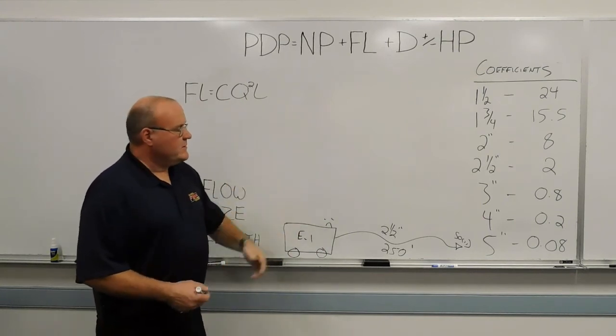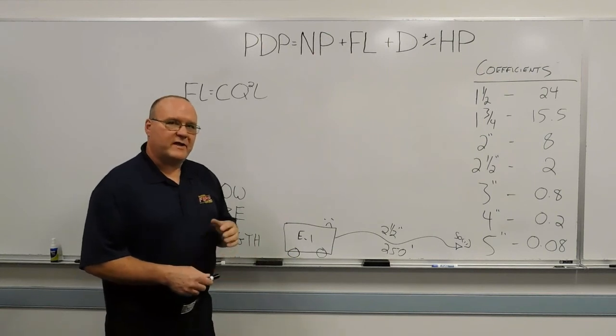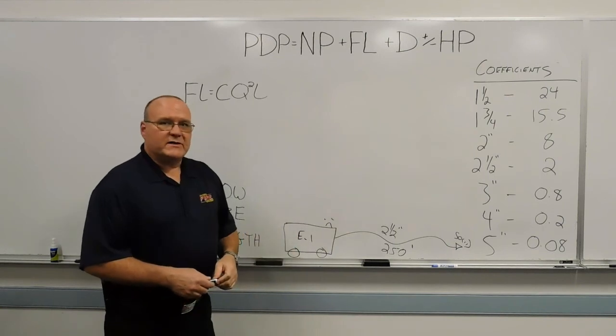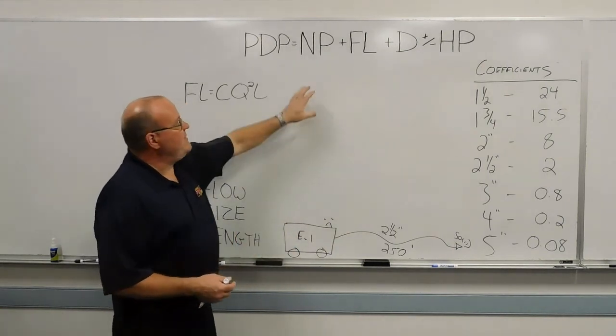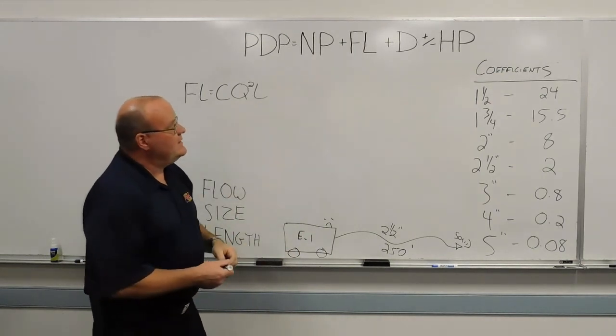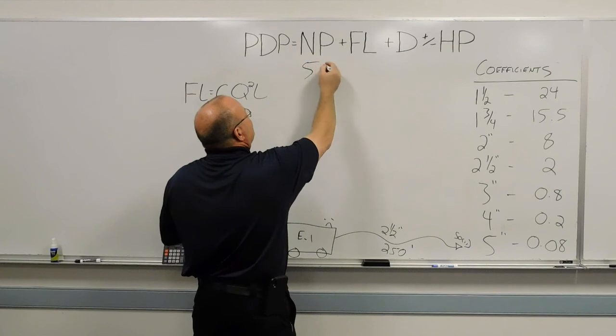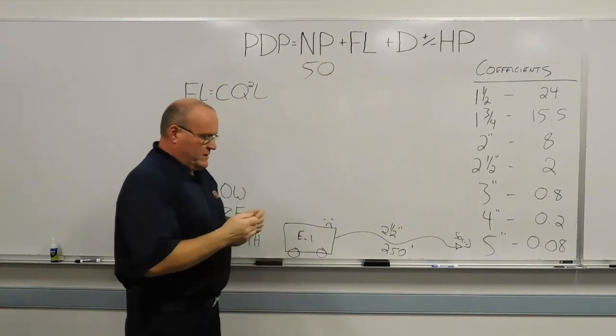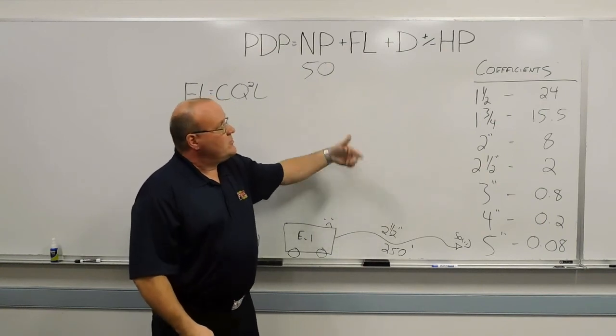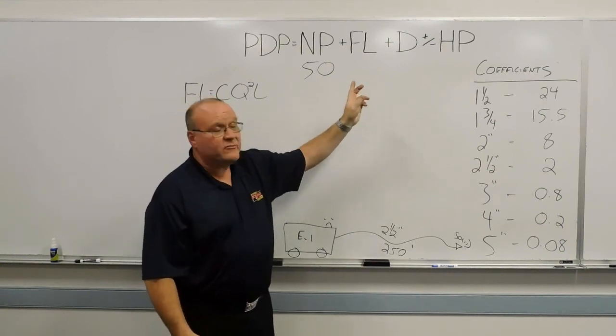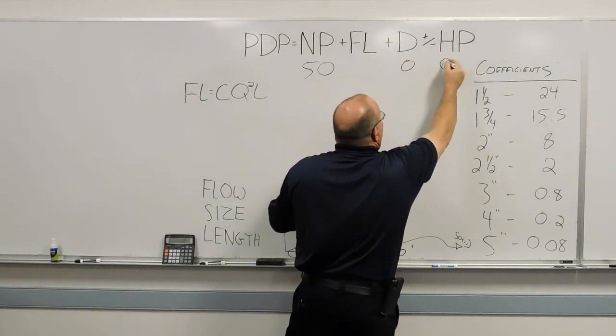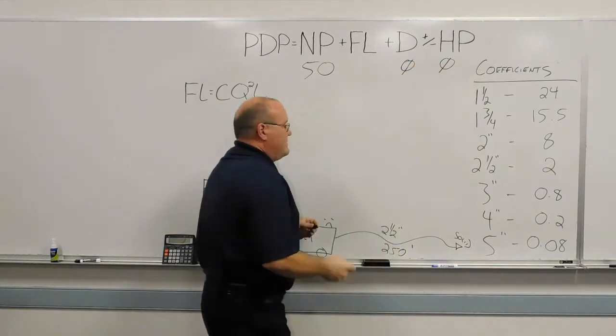So the example that we're going to use here is a two-and-a-half-inch attack line, 250 feet long, with a solid-stream nozzle. So, solid-stream hand line, our nozzle pressure is a given. That's going to be 50 pounds. We can go ahead and plug that in there. And as good pump operators, we're going to account for all four elements. We don't have any devices or any head pressure or elevation changes to worry about in this example. So we'll go ahead and account for those. Zero and zero. And that leaves us with the friction loss.